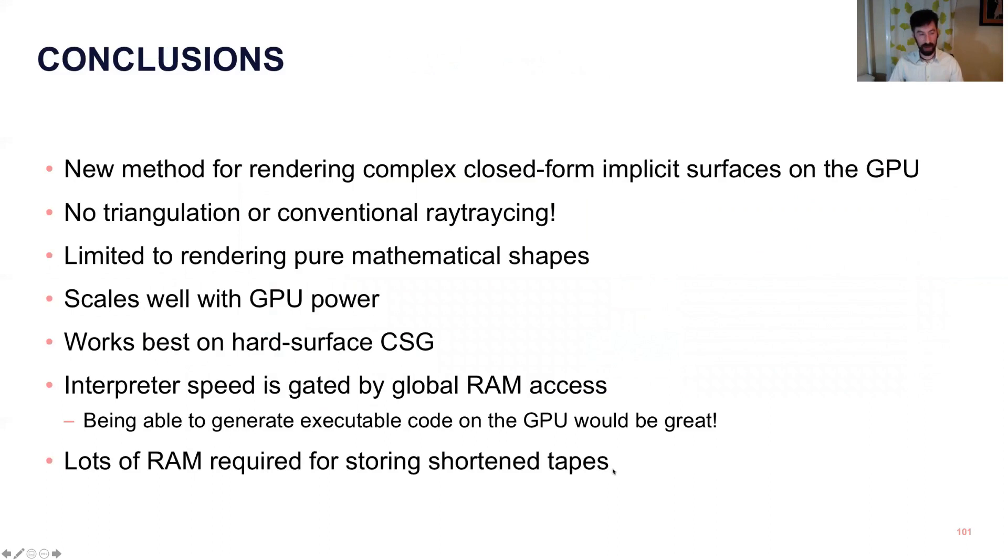So now we're going to kind of wrap up and talk about conclusions and future work. So this has been a new method for rendering these mathematical implicit surfaces on the GPU without triangulation or ray tracing. It scales well with GPU power, comparing old laptops to modern data center GPUs. It works extremely well on hard surface CSG, and more poorly on models that have fewer CSG operations. And then there are some limitations in terms of RAM access, which probably could be a subject for future work.